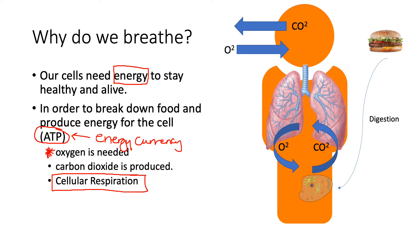A byproduct that's produced — and by byproduct I mean a waste product, something that the body wants to rid itself of — is carbon dioxide. So what we have here is: in order for a cell to stay healthy and carry out its processes, it must undergo cellular respiration. In order to do that, it has to have a constant supply of oxygen, and a waste product is going to be produced: carbon dioxide.